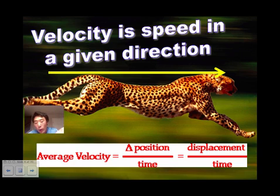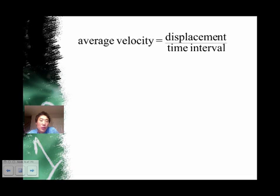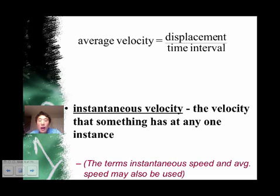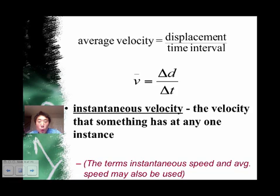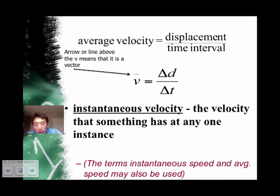The equation for velocity is position over time, or displacement over time. Average velocity is equal to displacement over some time interval — meaning some amount of time must have passed. Instantaneous velocity, however, is the velocity something has at any one instance. The vector velocity equation is displacement over a time interval. Remember that triangle means delta, or change, and a dash or arrow above the v — or a bolded v — means it's a vector requiring a direction.